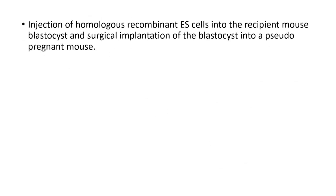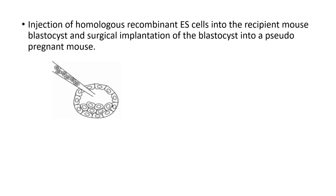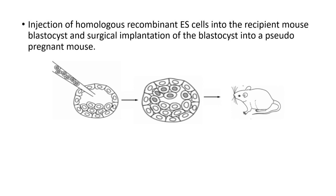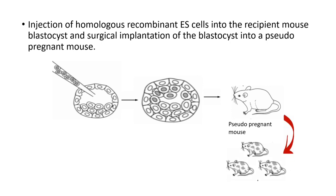Next is the injection of homologous recombinant embryonic stem cells into the recipient mouse, followed by surgical implantation of the blastocyst into a pseudopregnant mouse. The embryonic stem cells are injected into the blastocyst cavity of an early embryo, incorporated, and then the embryo is surgically transferred into the pseudopregnant mouse.